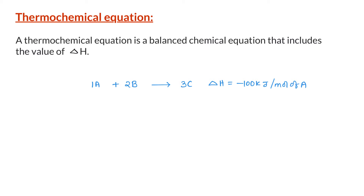In any thermochemical equation, the magnitude of the enthalpy change is proportional to the amount of substance that is being reacted. We can use the value of enthalpy change in stoichiometric calculations in the same way we use the mole ratio of a balanced equation. According to the stoichiometric equation, for every mole of A that is consumed, we get 3 moles of C. We can use this mole ratio to calculate the number of moles of C formed for a given amount of A consumed.